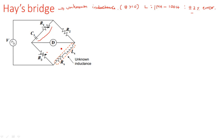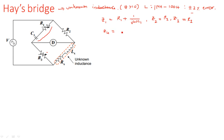When a parallel connection is present, it is better to use admittance instead of impedance — that is the best approach for easier calculation. Here, Z1 is the series connection: R1 plus 1 by j-omega-C1. Z2 is simply R2, Z3 is simply R3, and Z4 is the series connection of resistance and inductance: Rx plus j-omega-Lx.